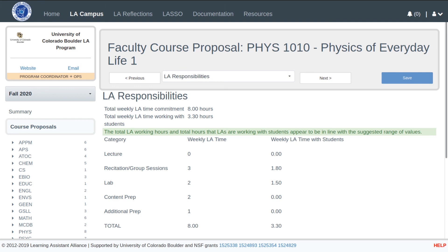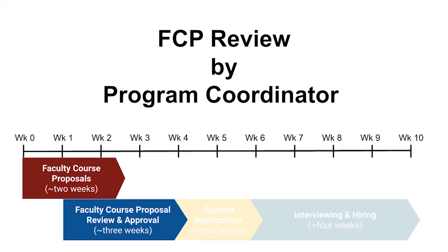Also, the green feedback band informs the faculty members whether their values are in line with ranges set by the program coordinator. Once an FCP is submitted to the program, it can be reviewed by the program coordinator. Let's now take a look at the review process.